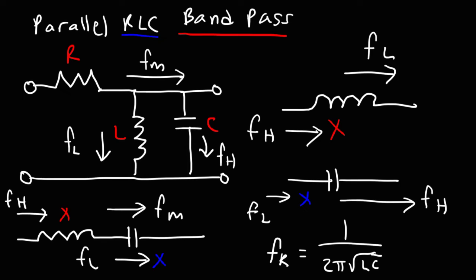But the mid-level frequencies, even though they will be attenuated from the original value, will still have the highest output voltage relative to the low-level and the high-level frequencies. So in this case, this is a bandpass filter because it passes the mid-level frequencies while blocking the low-level and the high-level frequencies.